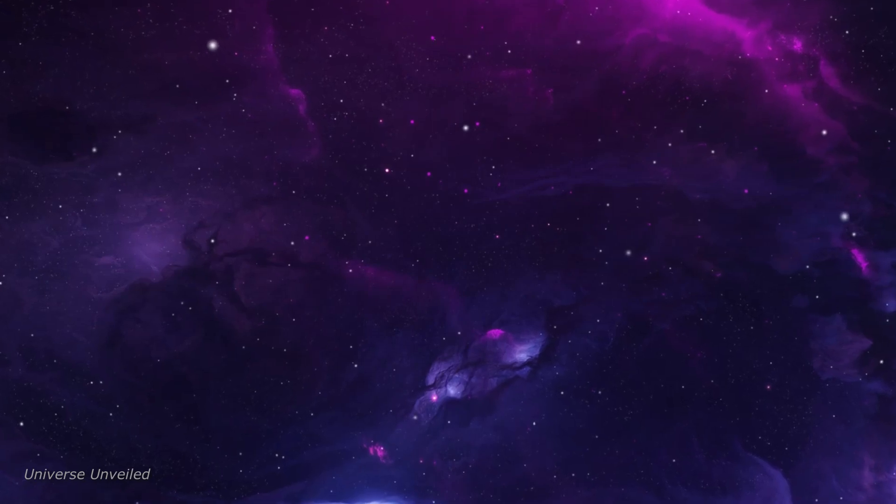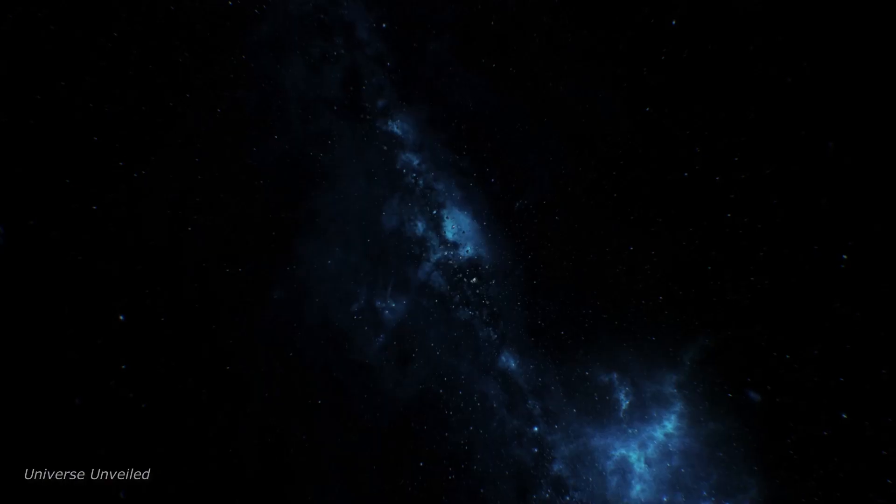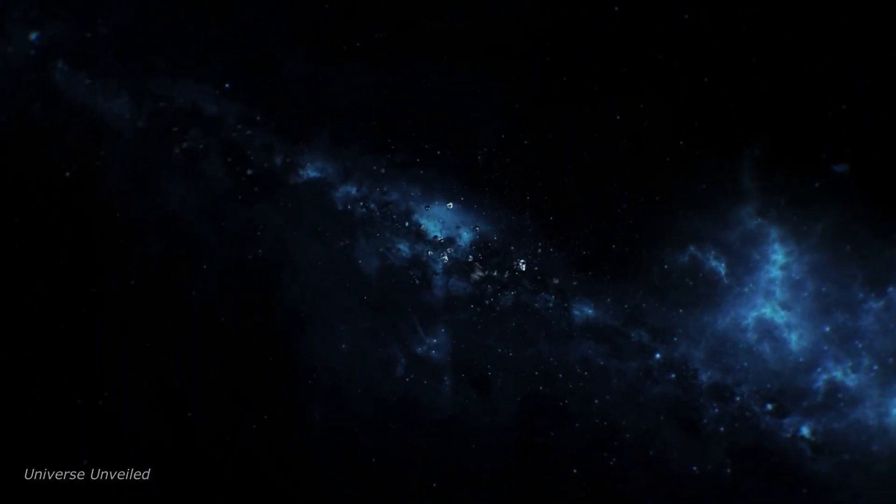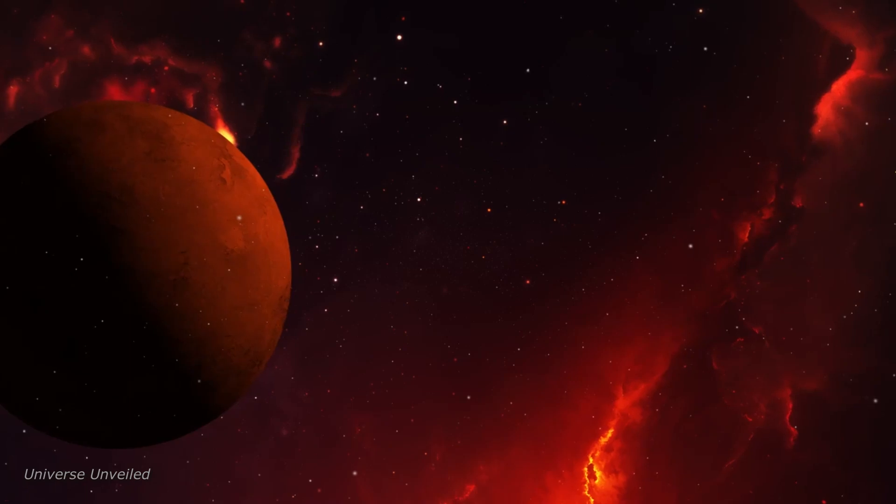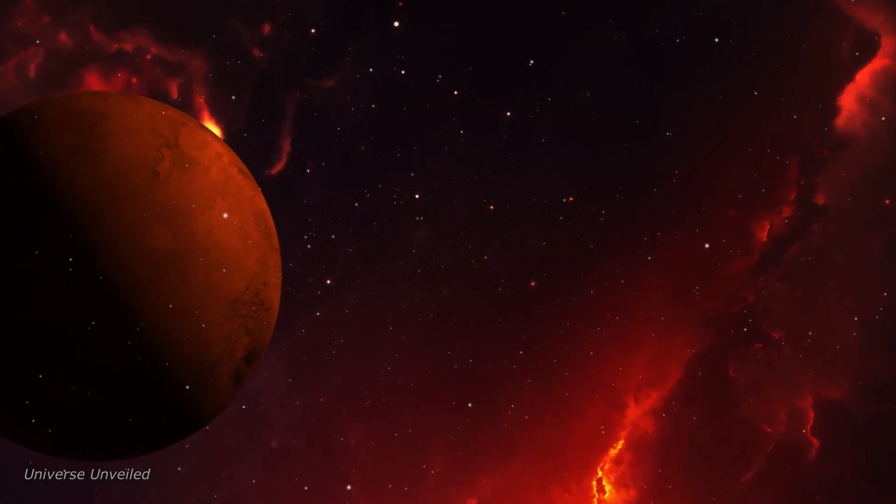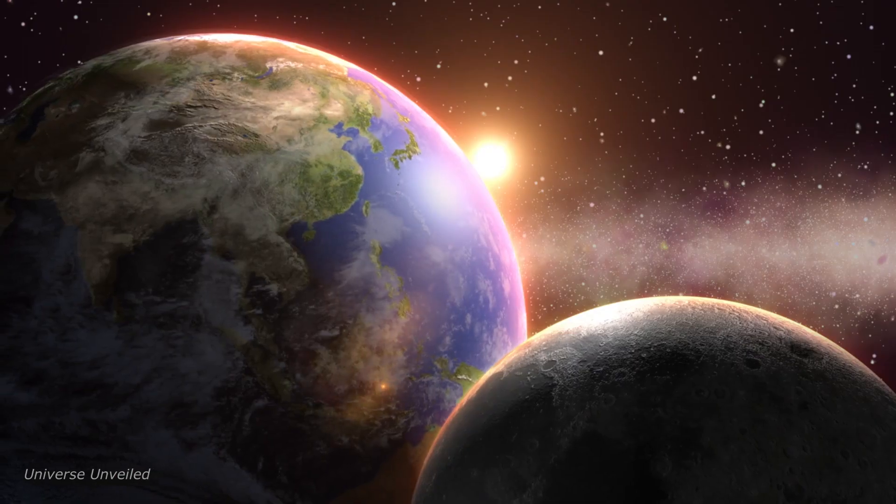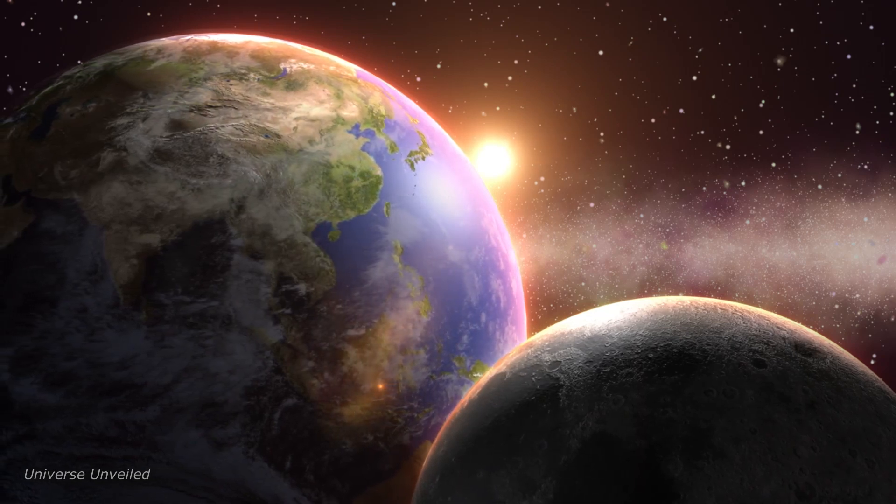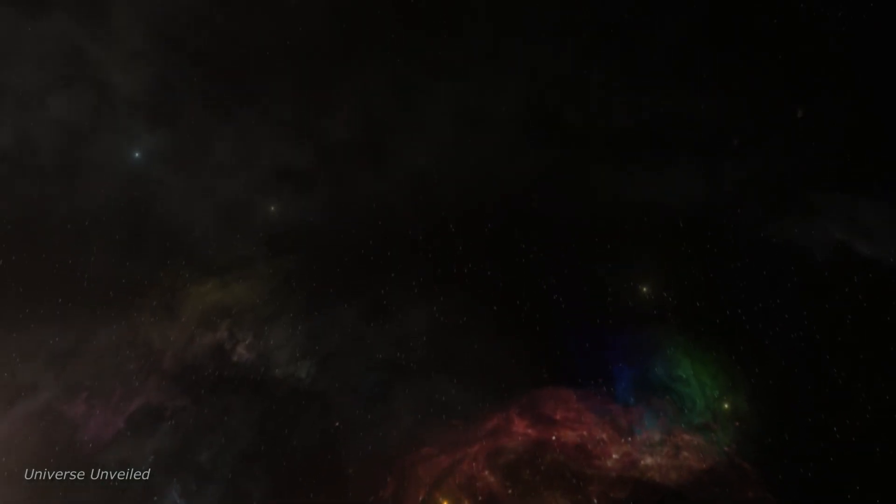Each planet, with its unique characteristics, contributes to the fascinating diversity of our solar system. From scorching hot Mercury to icy cold Neptune, from the life-filled Earth to the barren landscapes of Mars, our solar system is a testament to the cosmic variety and intrigue that exists in our universe. But this is just the beginning.